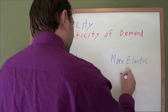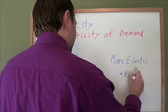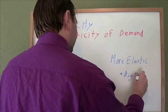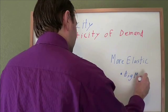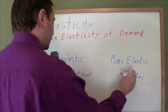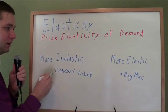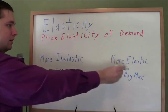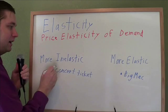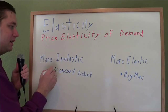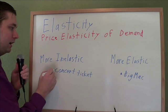Not everyone's going to just stop buying Big Macs, but some people are. More people would stop buying Big Macs than would stop buying concert tickets, and that makes them more elastic. That's all that elasticity means — how much do you care about the price?